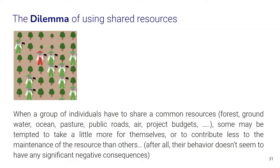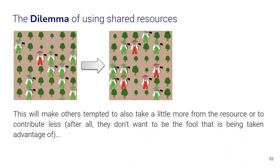The use of shared resources presents a very important dilemma that we can generalize. Every time a group of individuals has to share a common resource — such as a forest, groundwater, ocean, pasture, public roads, the air, or common project budgets — some people may be tempted to take a little more for themselves or contribute a little less to the maintenance of the resource. They might think their behavior doesn't have any significant negative consequences for anybody, and they can gain a little from it. But this behavior by just a few will make others tempted to also take more or contribute less, as they don't want to be taken advantage of and feel it should be fair and equal.